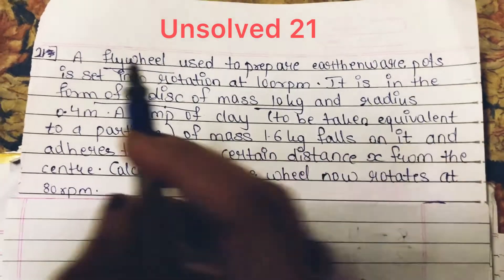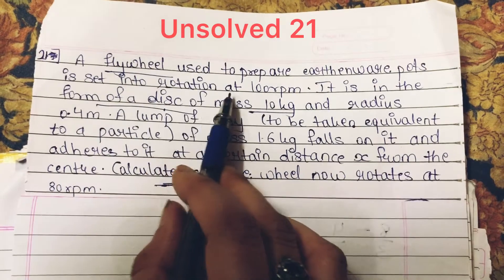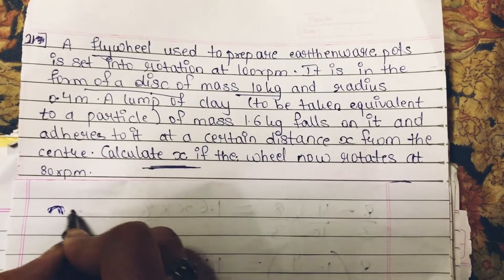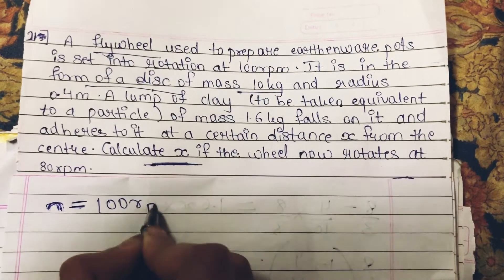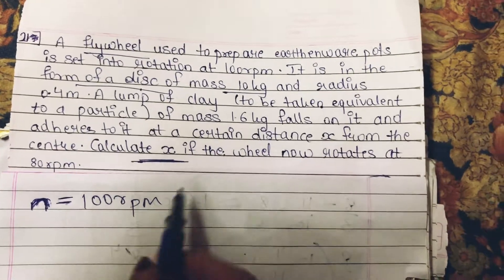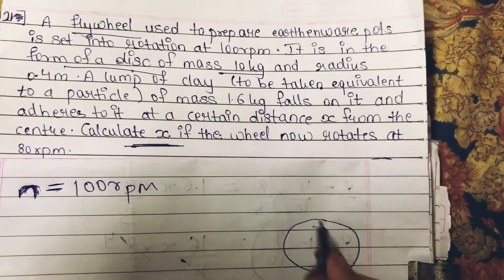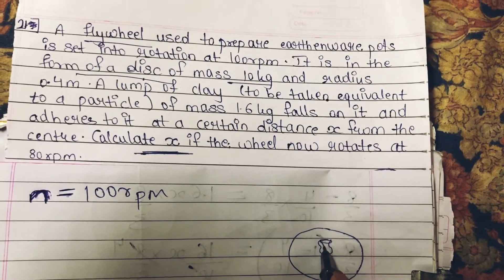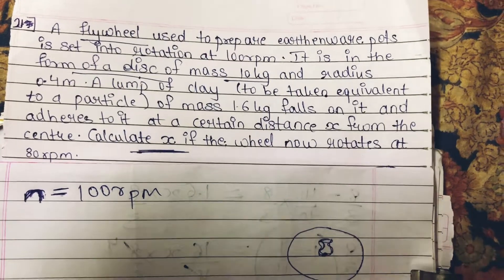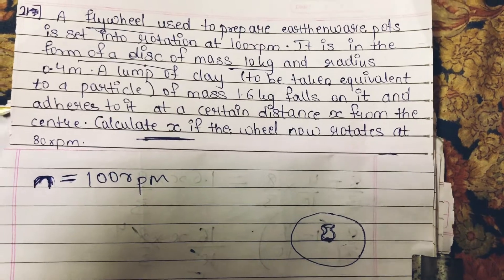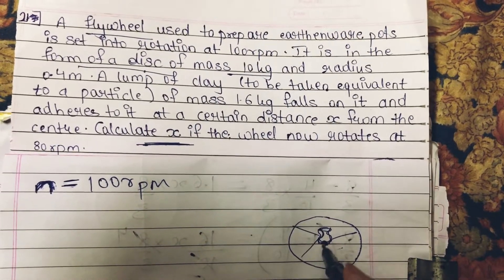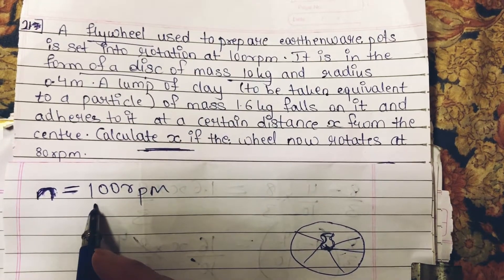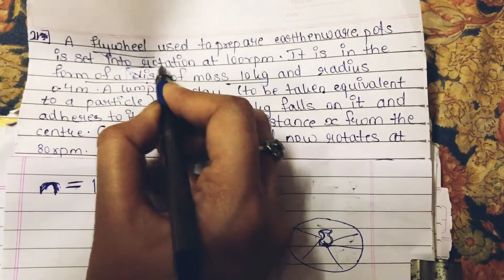Starting with numerical problem number 21. A flywheel used to prepare earthen pots is set into rotation at 100 revolutions per minute. We have frequency that is 100 revolutions per minute. The flywheel — you all might have seen a type of disk used to make earthen pots — is set into rotation at 100 revolutions per minute. It is in the form of a disk.